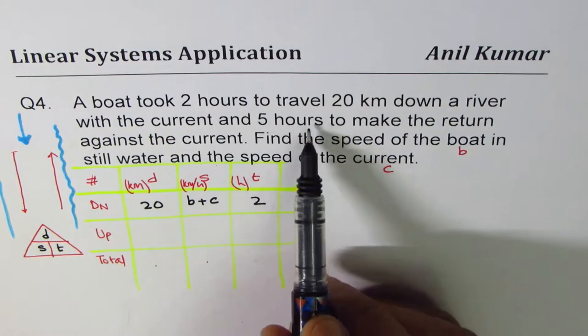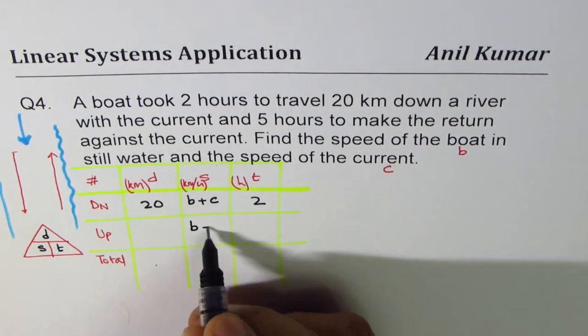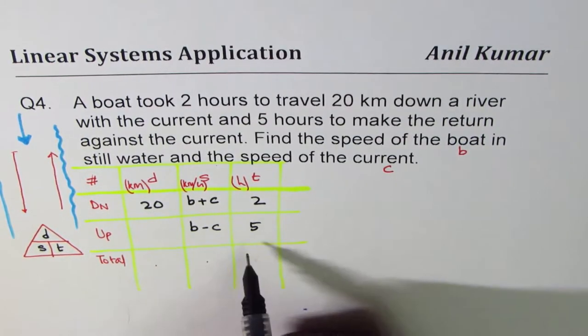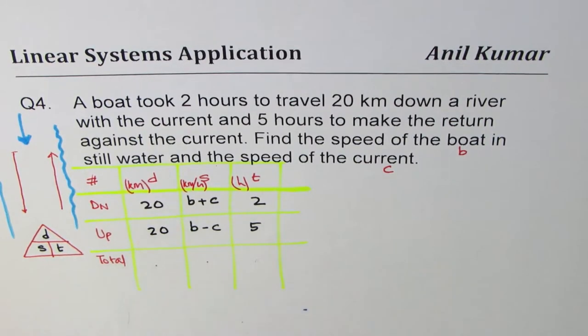Now, and five hours to make return against current. So speed is B minus C against current. You go slower and you take longer, five hours. How much distance? The same distance of 20. So that is how we have filled up the table.